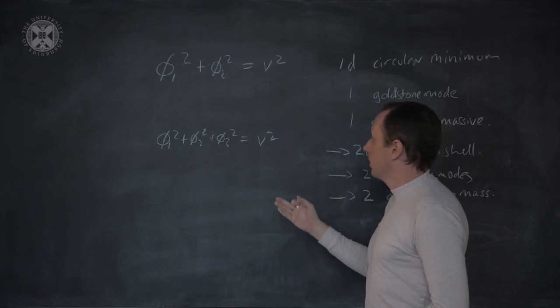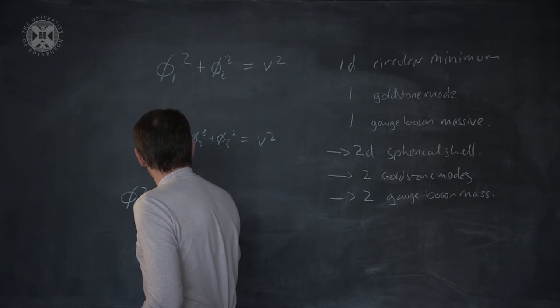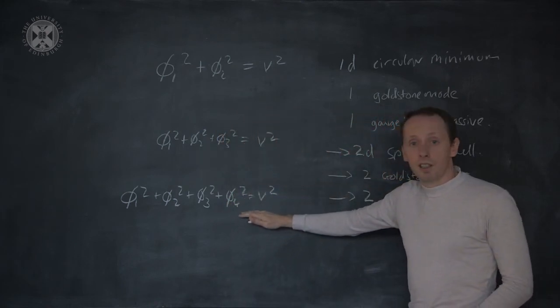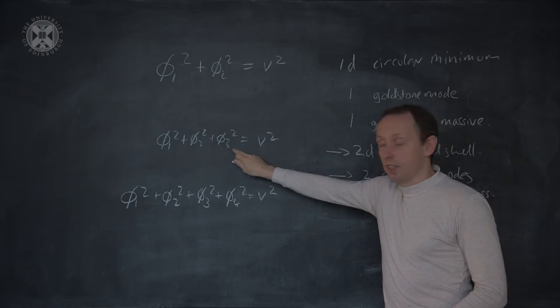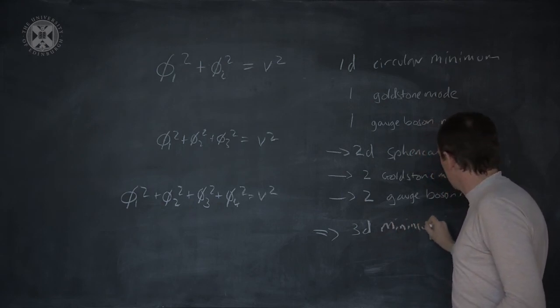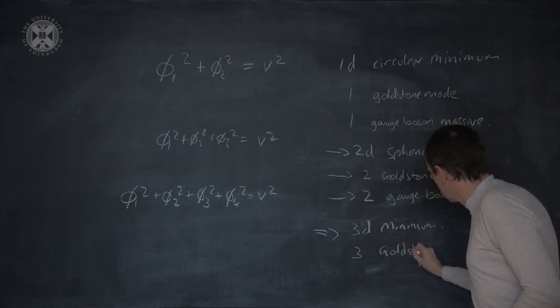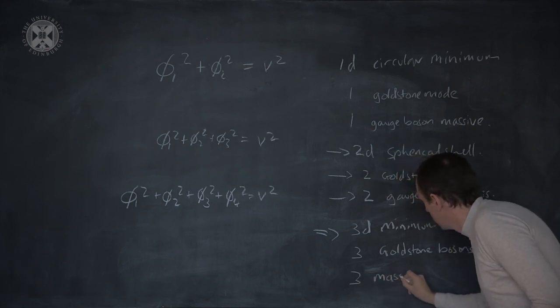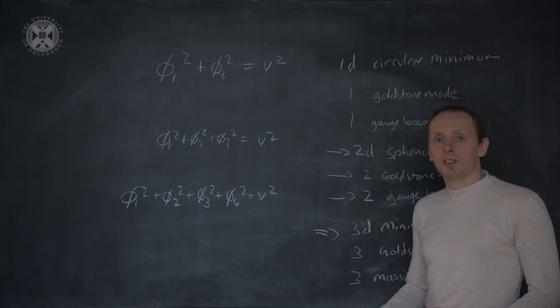In the standard model, the scalar field has four components. The minimum is defined by an equation like this. And you can probably see that the dimension of this minimum has to be one higher than for the spherical case. So we have a 3D minimum. Goldstone's theorem tells us there should be three Goldstone bosons. And these are available to give mass to three gauge photons. And you will see how this plays out in the next section.